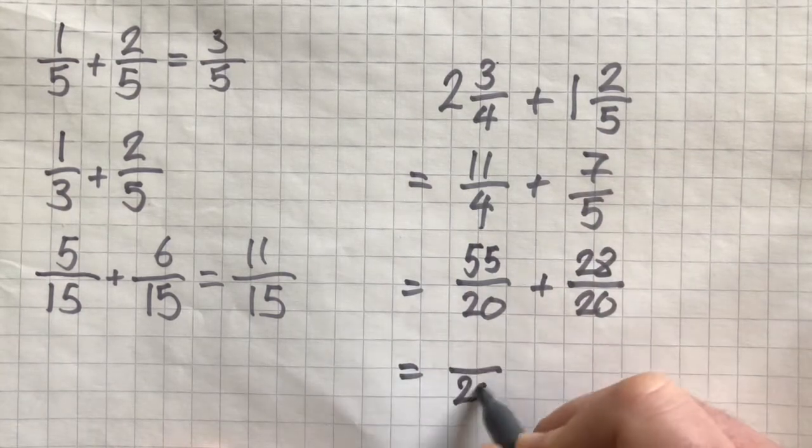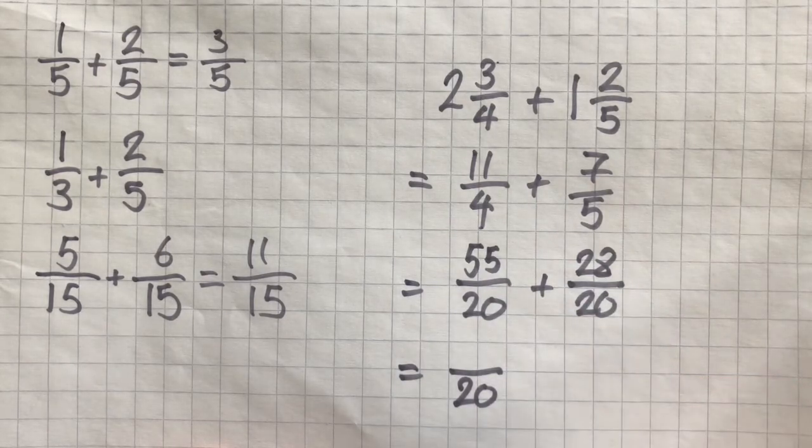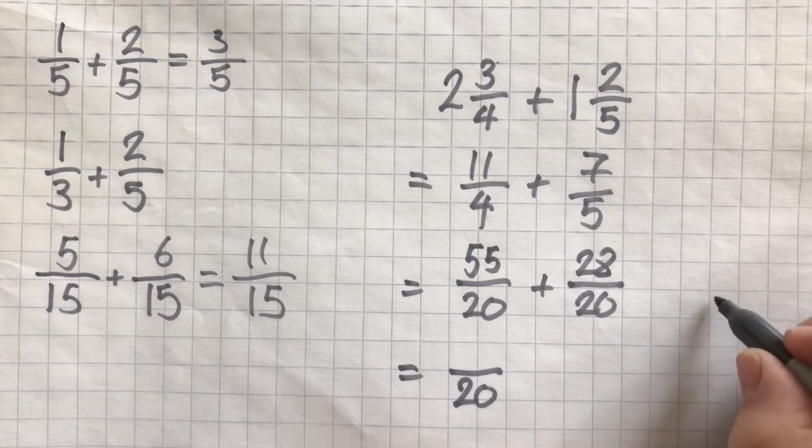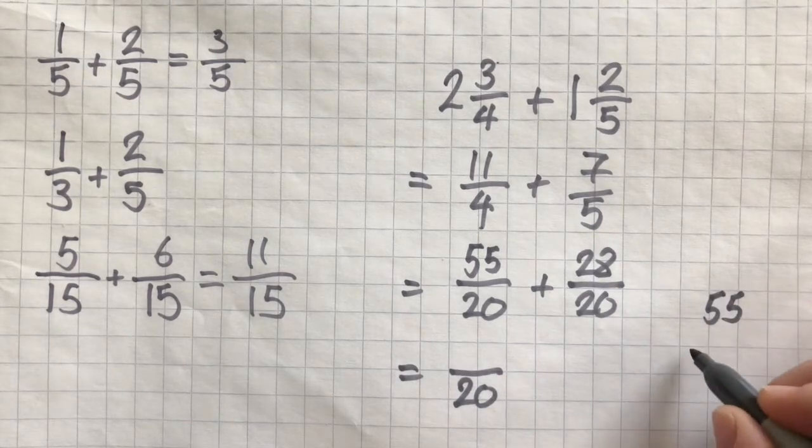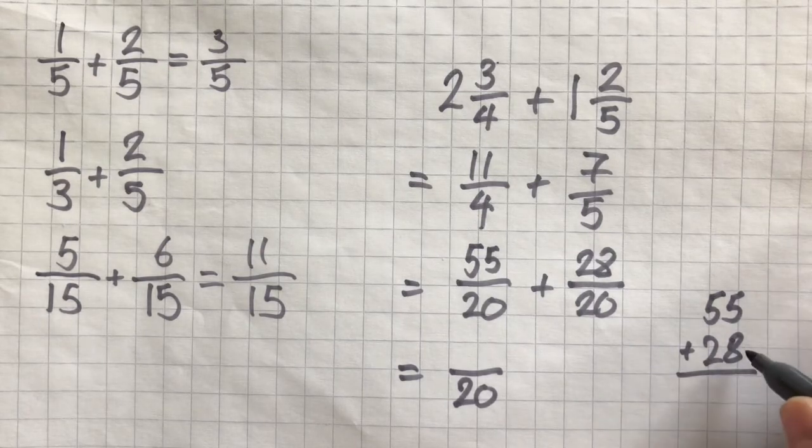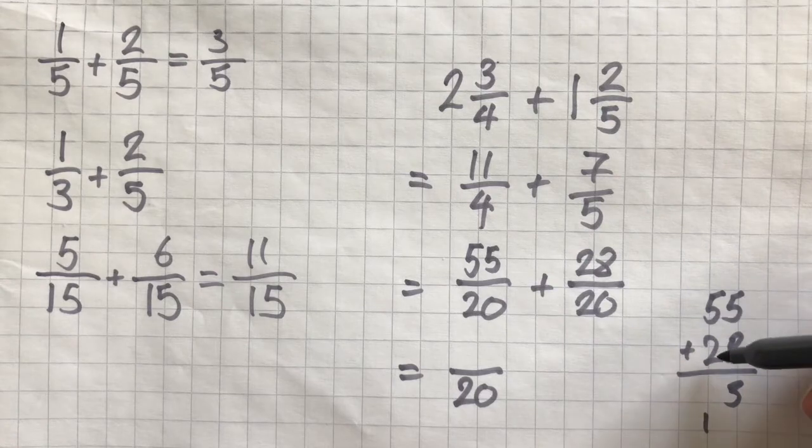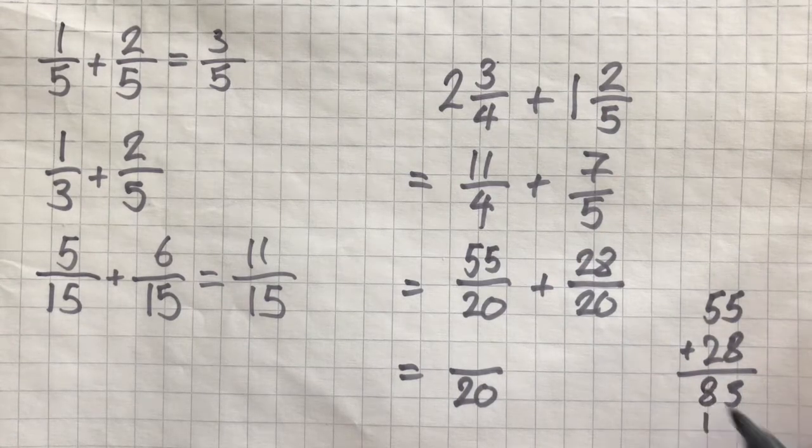In order to work out our answer here, we need to do 55 plus 28. If you can't do that question in your head, it's well worth just writing it down the side of the page and calculating it carefully. 5 plus 8 is 13, and then 5 plus 2 is 7, plus 1 is 8.